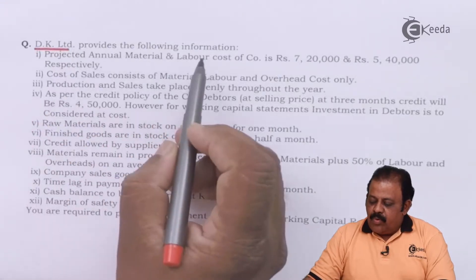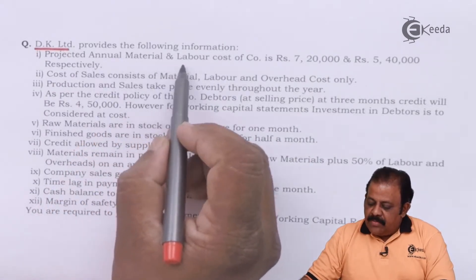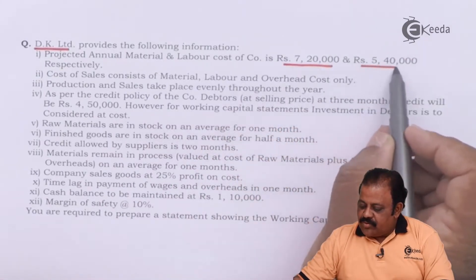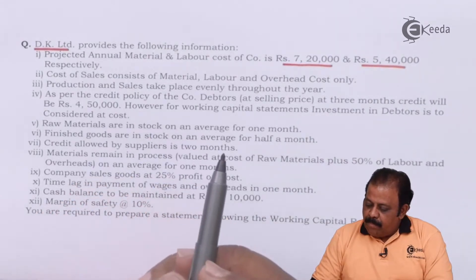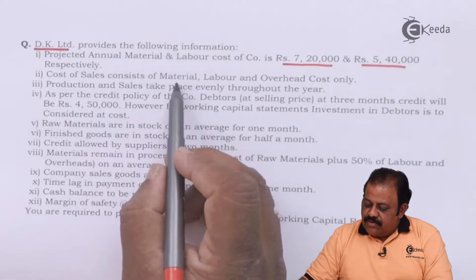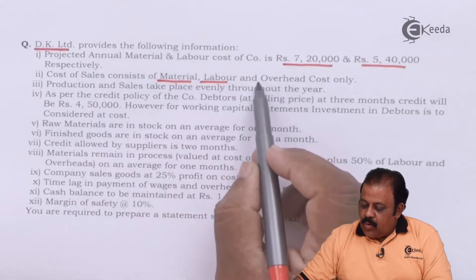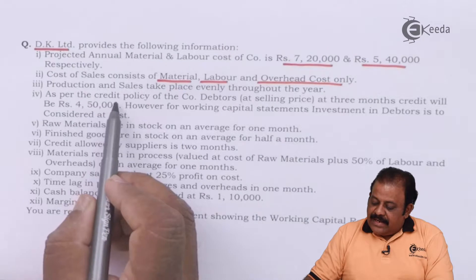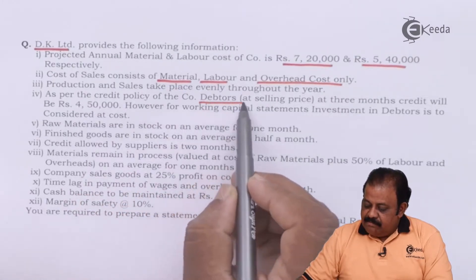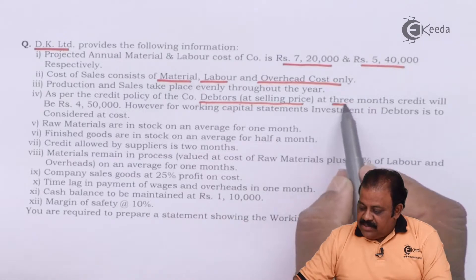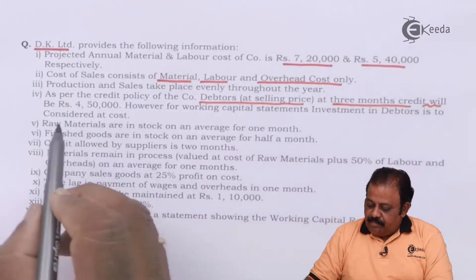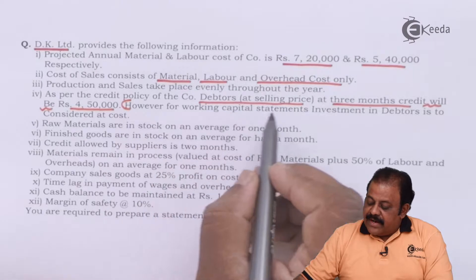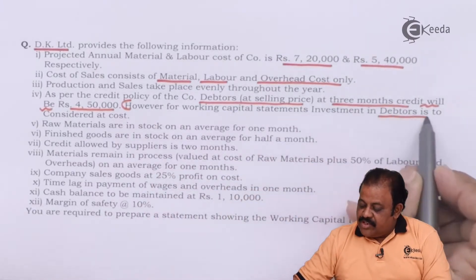DK Limited provides you the following information. Projected annual material and labor cost of the company is seven lakh twenty thousand and five lakh forty thousand respectively. Cost of sales consists of materials, labor and overhead cost only. Production and sales takes place throughout the year. As per the credit policy of the company, debtors at selling price at three months credit will be rupees four lakh fifty thousand.